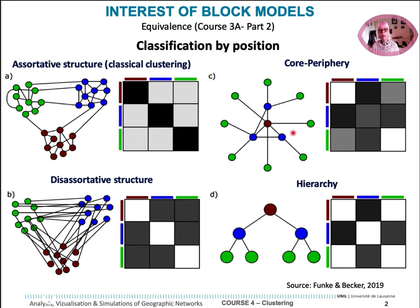We also have other interesting models like core-periphery, which maximizes the connection between the center and the periphery shown in blue, and between the blue and the green. In contrast, there are fewer direct relations between the center and the periphery in the opposite groups of center and periphery.